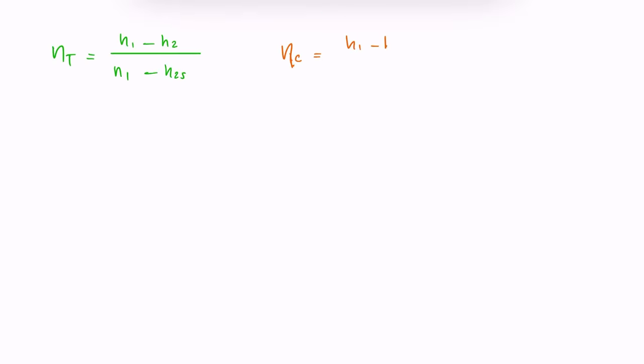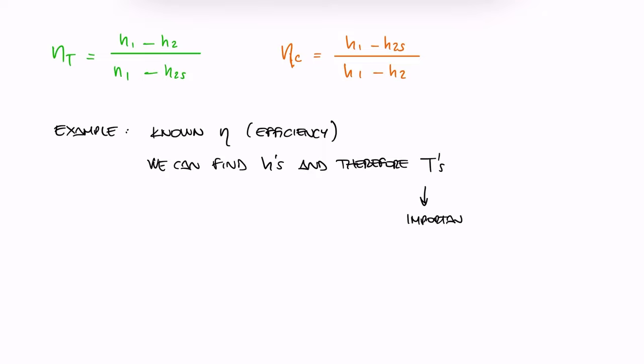These two expressions are important because if, for example, we know what the isentropic efficiency of the device is, we can calculate the inlet or exit temperatures through the enthalpy values. And the temperatures are of course important in any process to fully define a state at any given stage in a more complex process or cycle.